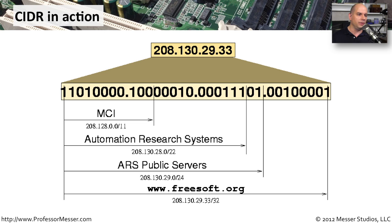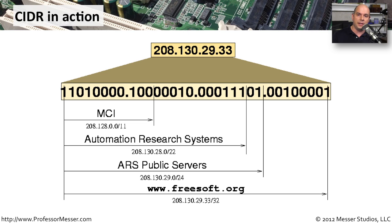How did that server get that address? It starts with MCI, which had a big block of addresses — 208.128.0.0 with a slash 11 subnet mask. The flexibility of classless addressing allowed them to use 11 bits rather than 8 or 16, which made more sense for their needs. From that block, MCI gave the Automation Research Systems group a range of 208.130.28.0 with a 22-bit subnet mask, allowing them to subnet it further if they wished — and indeed they did.